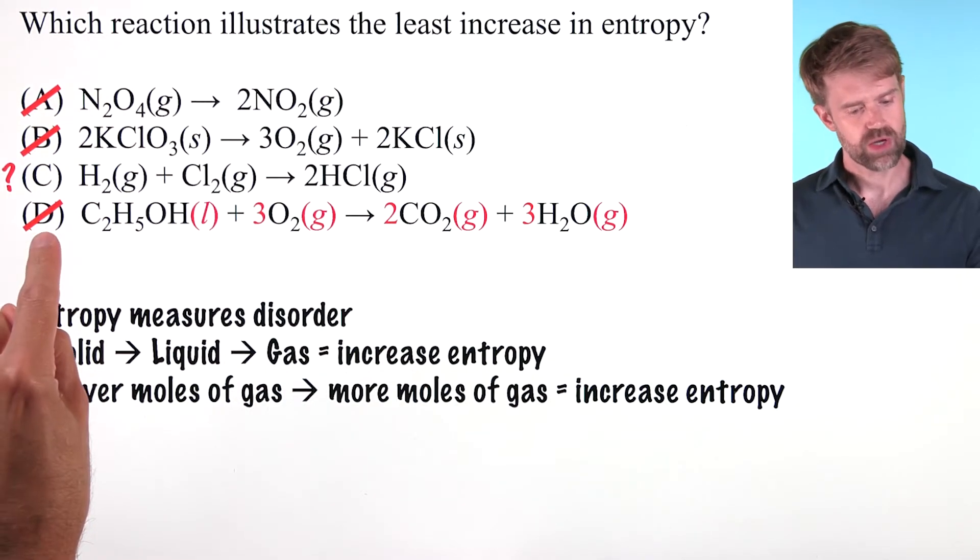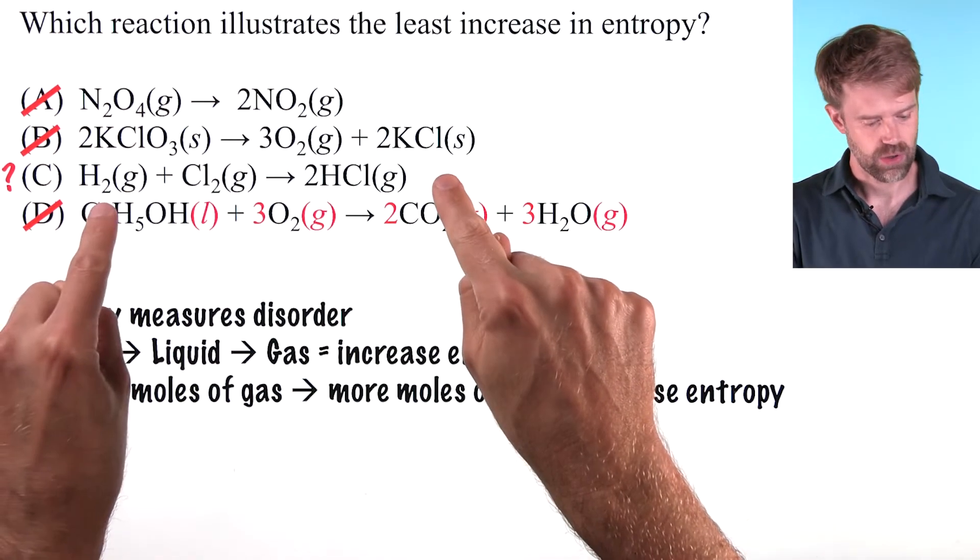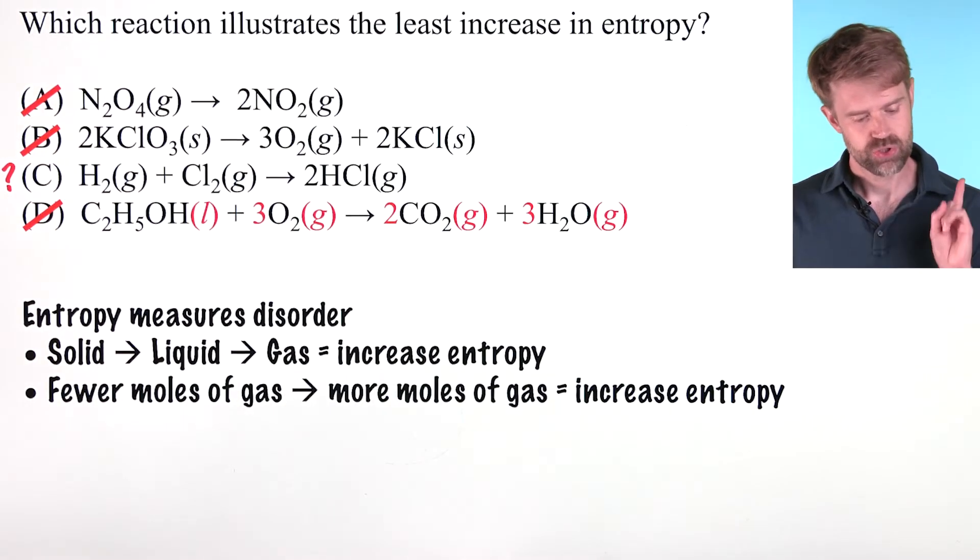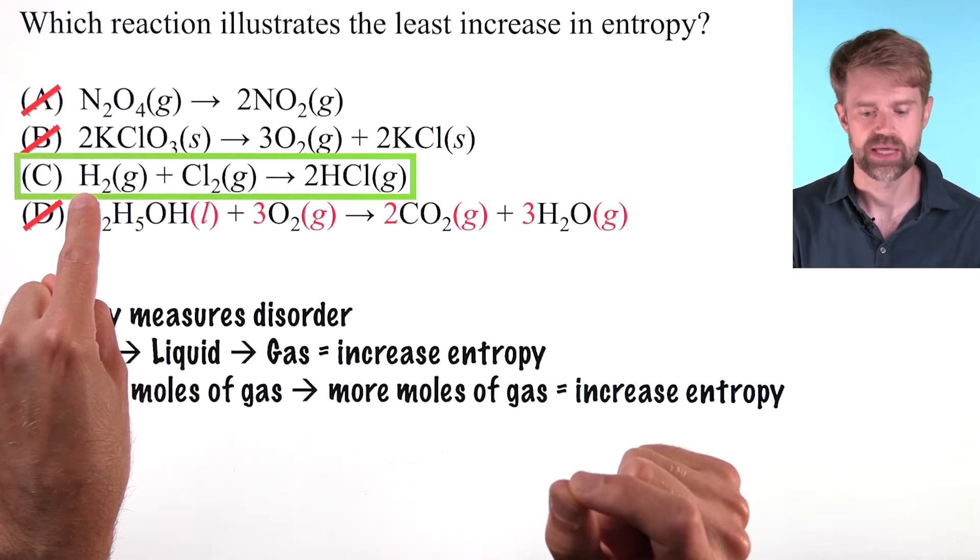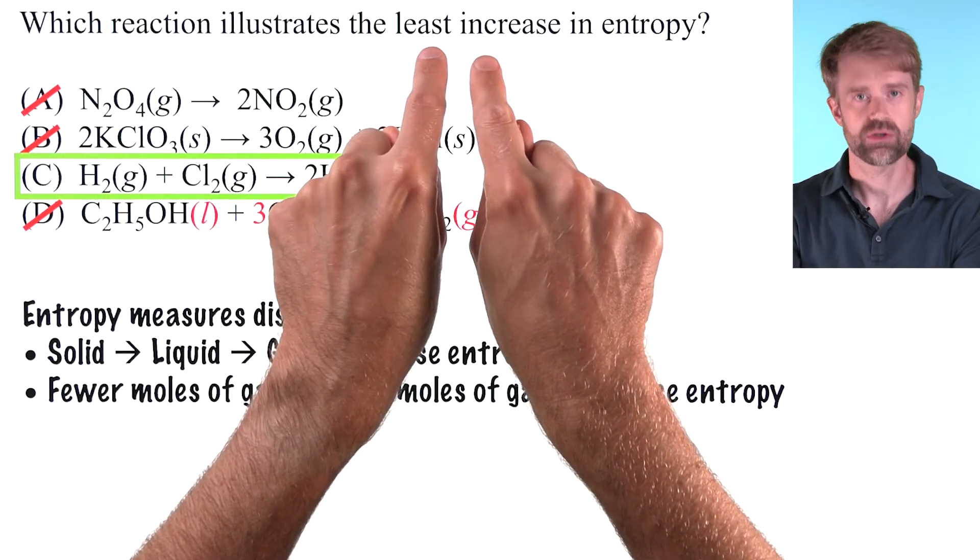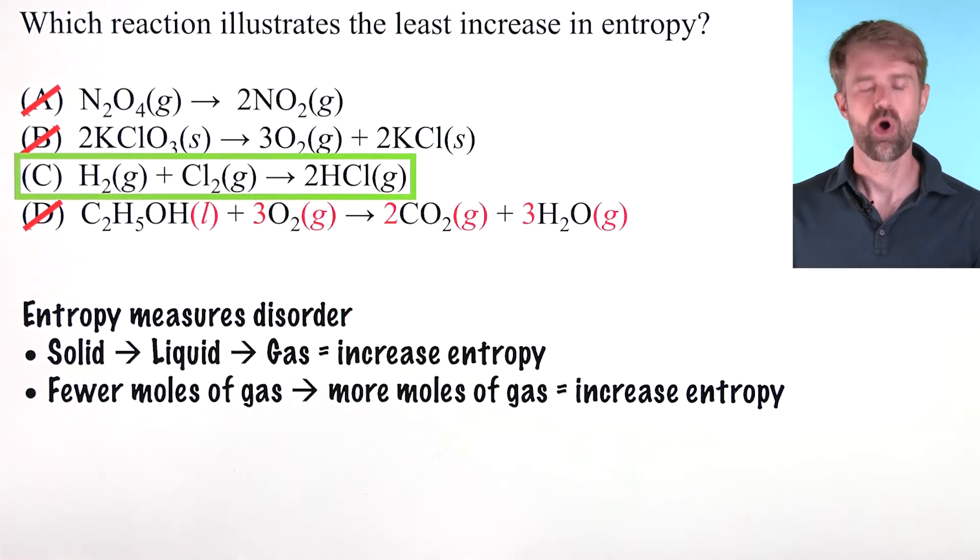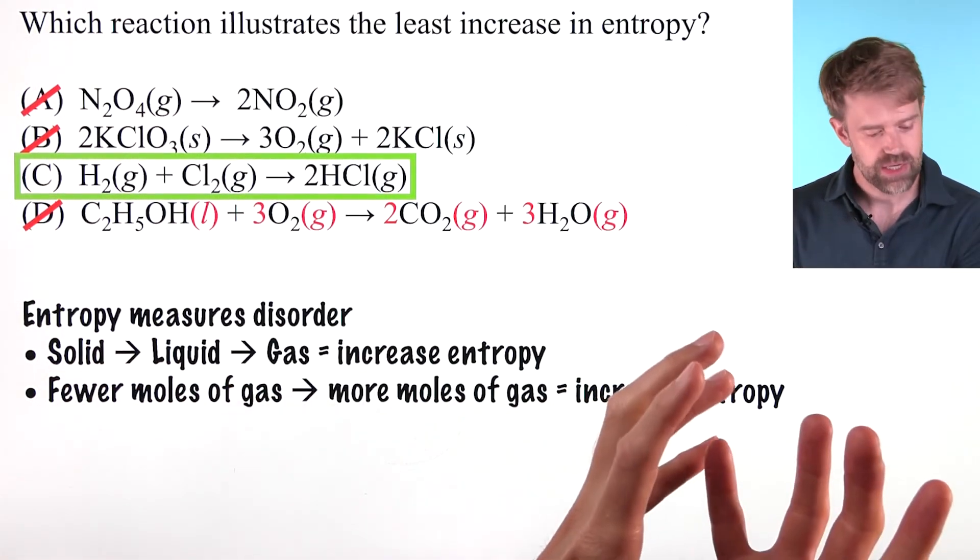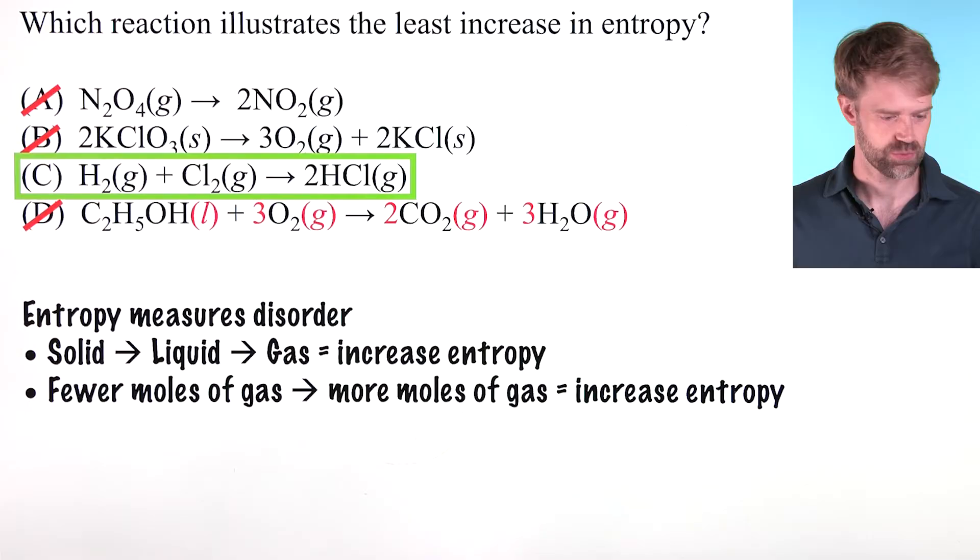That means we can cross D off and go back to our question mark here. Choice C is going to be the correct answer because it illustrates the least increase in entropy. All the other choices represent a significant increase in entropy except for this one.